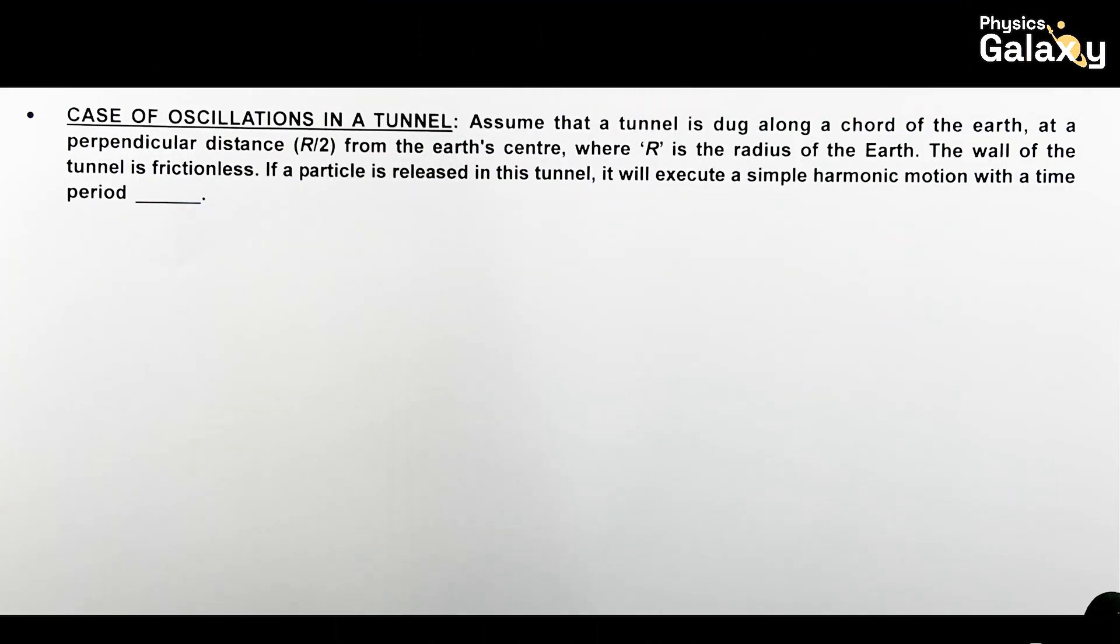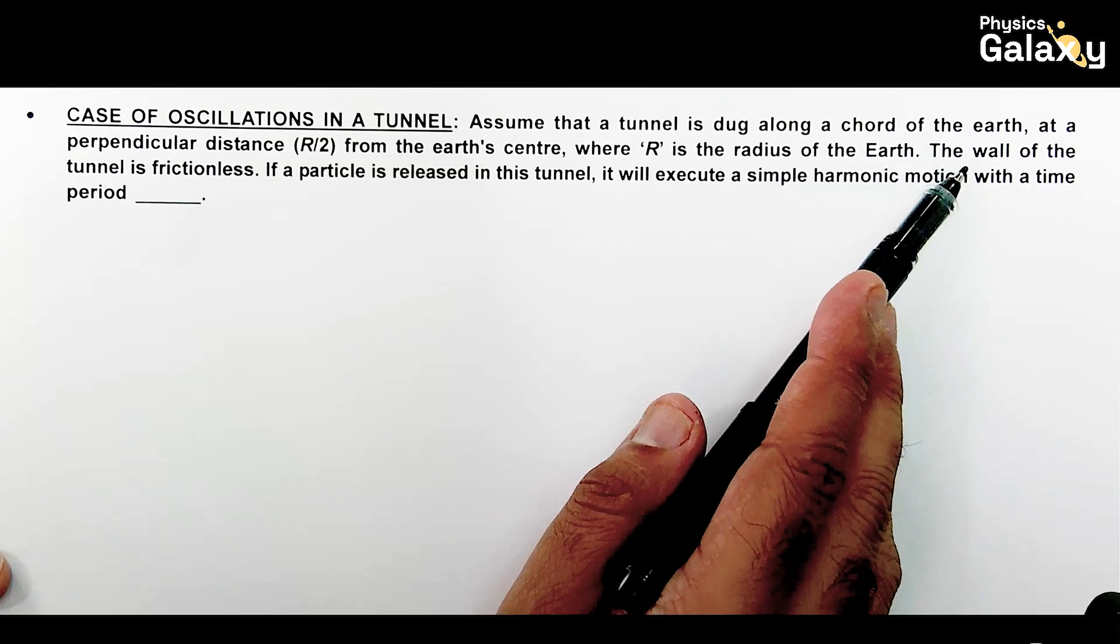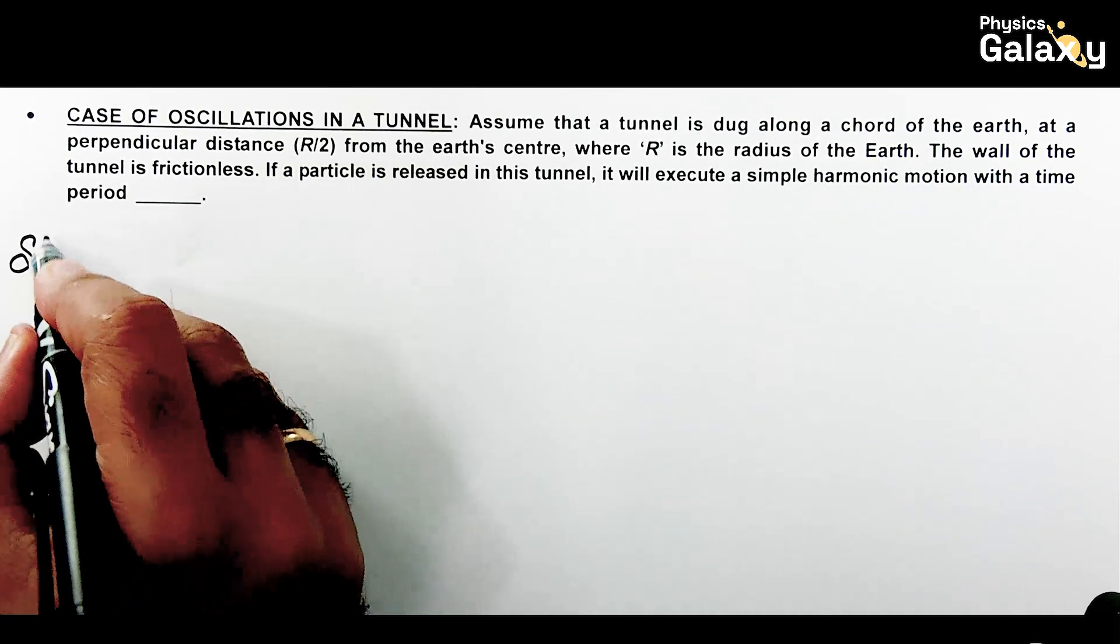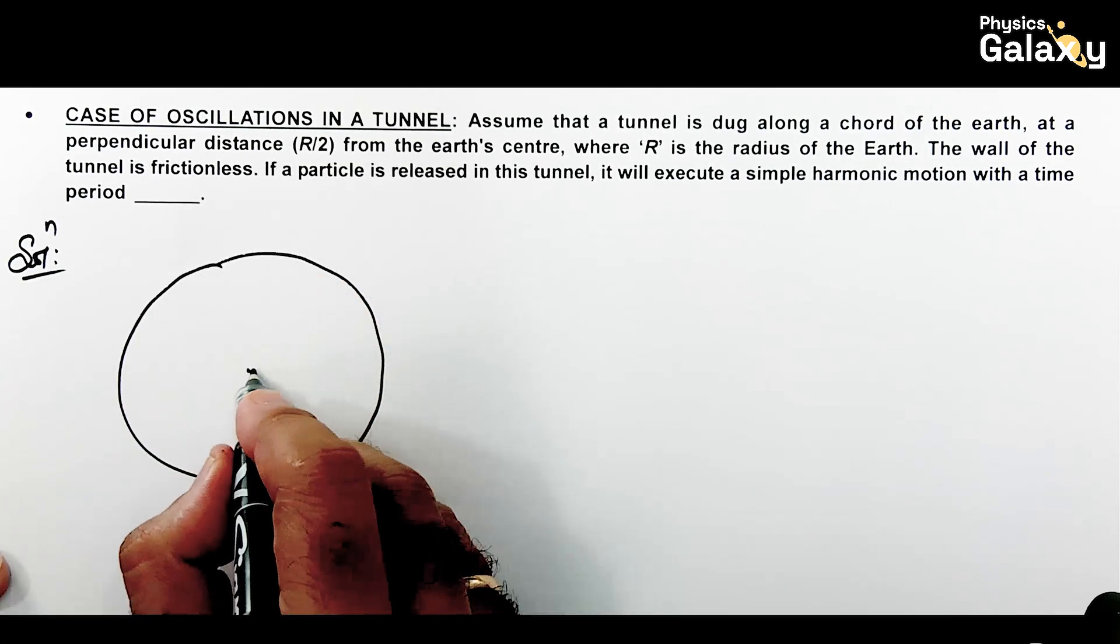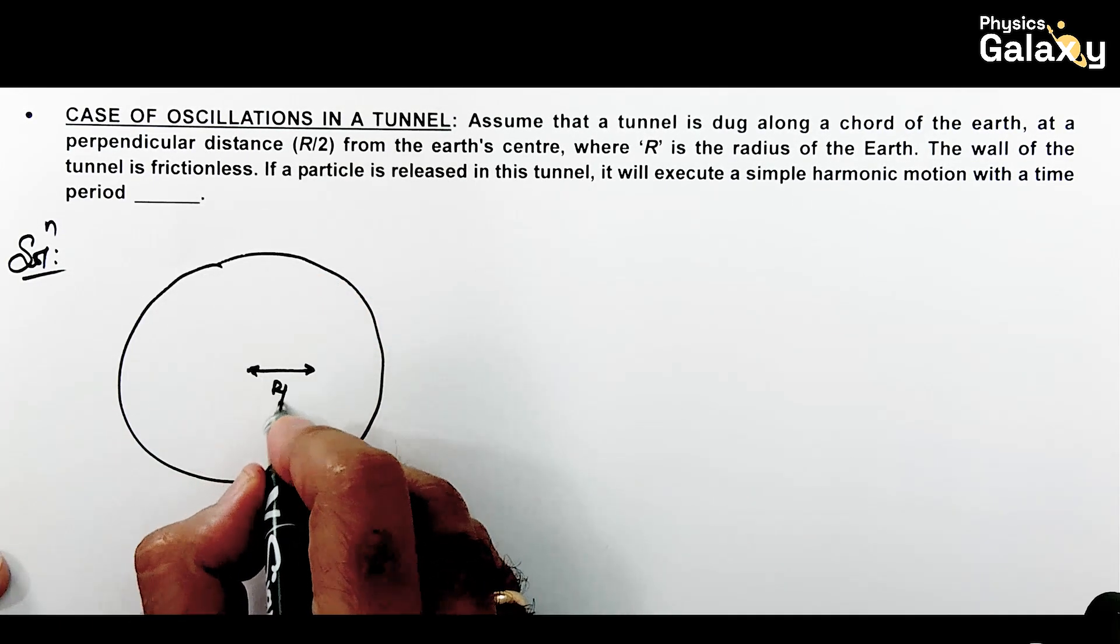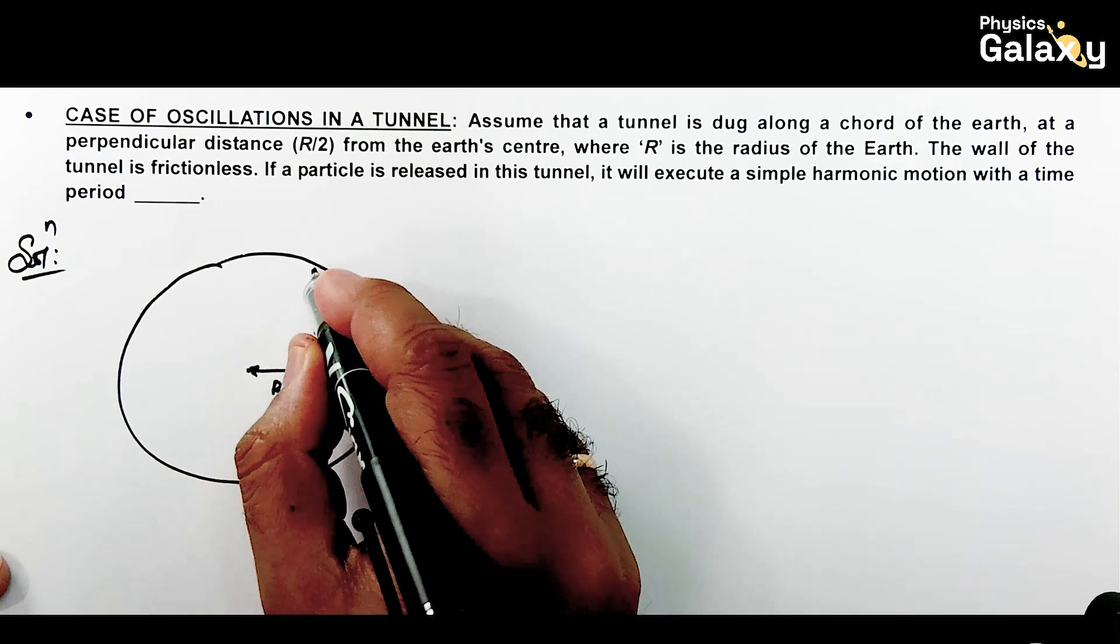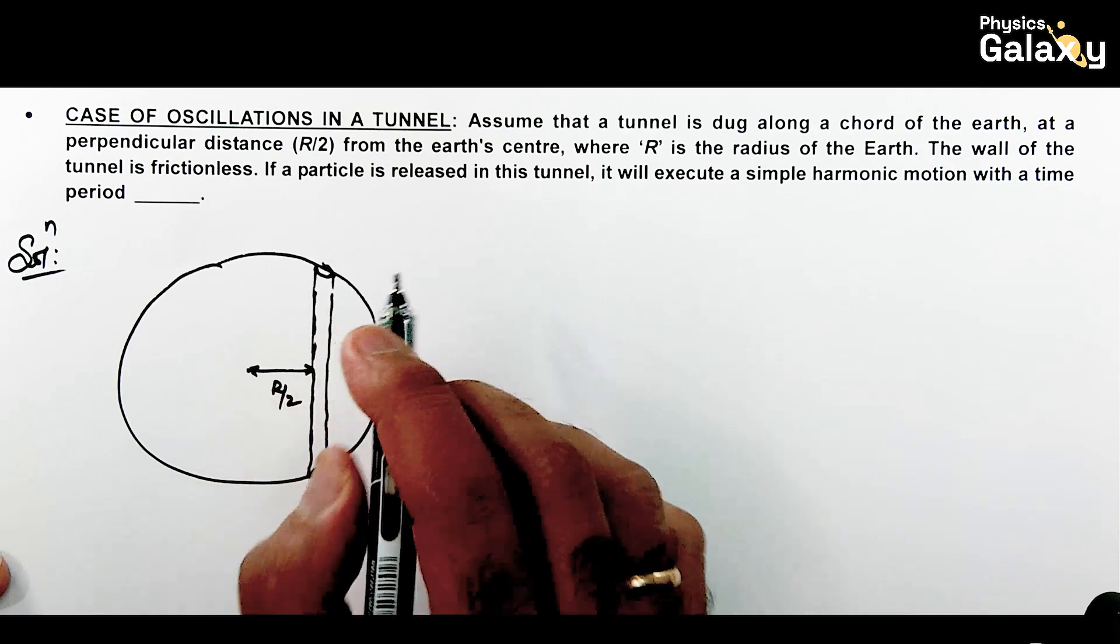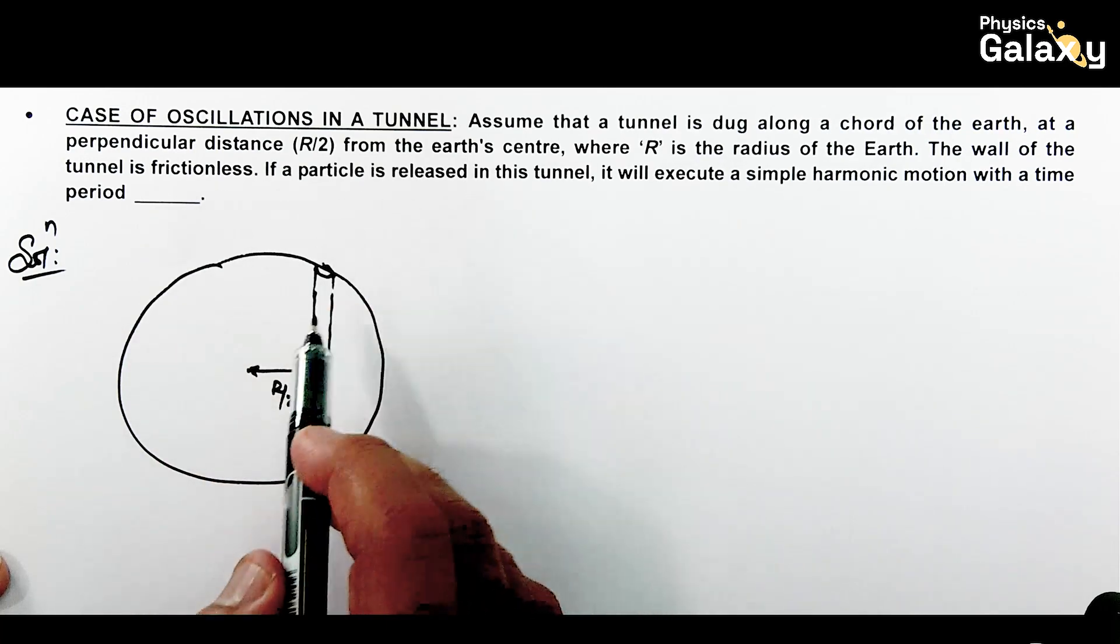Here we are going to talk about the case of oscillations in a tunnel. Assume that a tunnel is dug along the chord of Earth at a perpendicular distance R/2 from the Earth's center. Let's draw this: Earth's center is at a distance R/2, and we're digging out a tunnel like this.